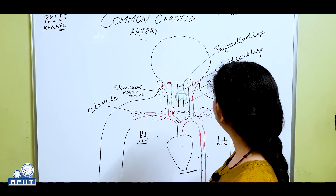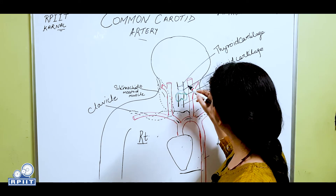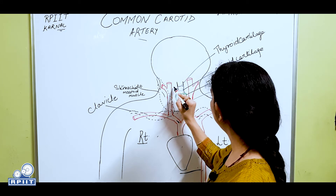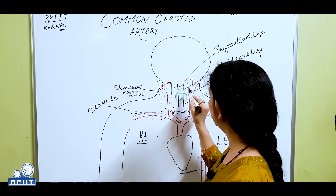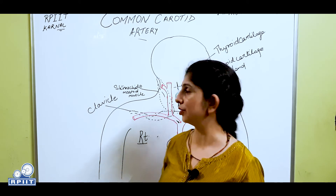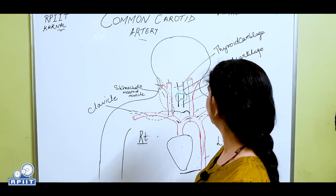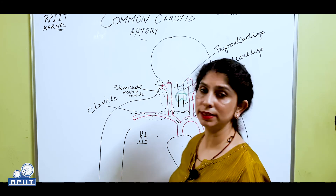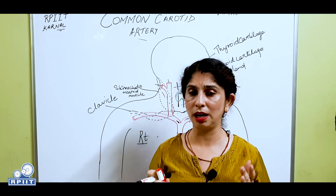Above the thyroid gland we have the cricoid cartilage, and above that the thyroid cartilage. At the level of the thyroid cartilage, the common carotid artery divides into the internal carotid artery and the external carotid artery.